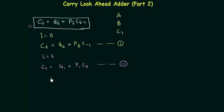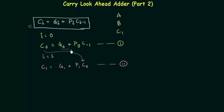What we want is for all carries c0, c1, c2, and c3 to have only c-1 on the right-hand side, so that we don't have to wait for any carry to propagate. This was already discussed in the first part of the CLA. In equation 1, c0 already has c-1 only, but in equation 2 we have c0, so we substitute the value of c0, which is g0 or p0 times c-1.